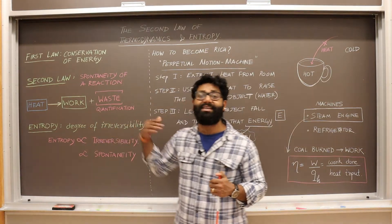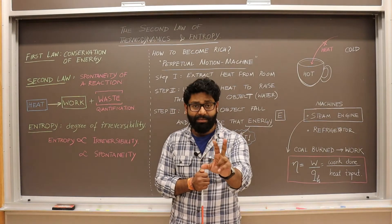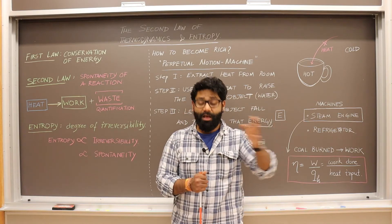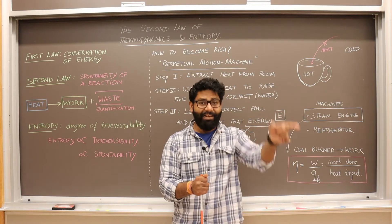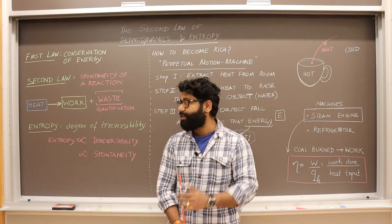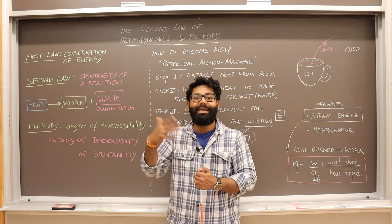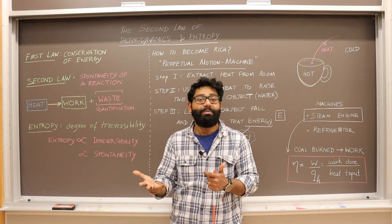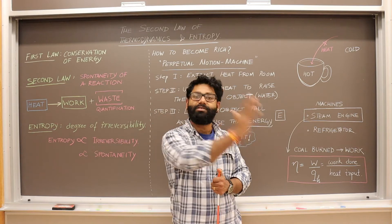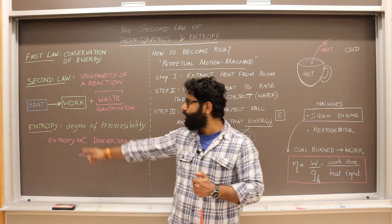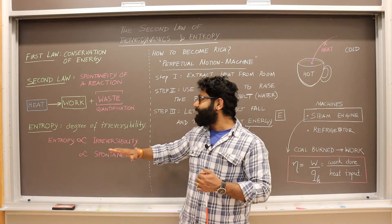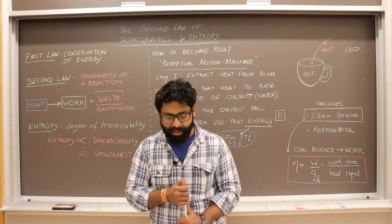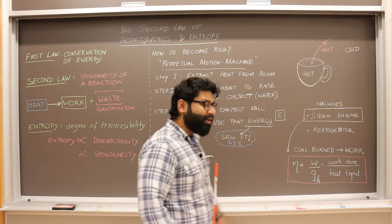Entropy is the degree of irreversibility. Any process which is more irreversible will have increasing entropy. Any process which is spontaneous will be irreversible and its entropy will increase. When a system moves from state A to state B spontaneously, it is the way that things are most stable. When it moves in that direction, entropy increases, and how much it increases is directly proportional to the irreversibility.